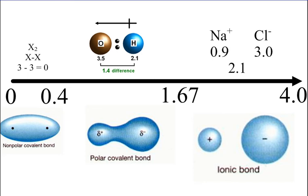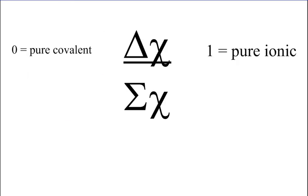Most bonds are between purely ionic and purely covalent. The polarity of a bond can be estimated by the difference in electronegativity over the sum of the electronegativities. This gives a range from 0 to 1, where 0 is completely covalent and 1 is completely ionic.